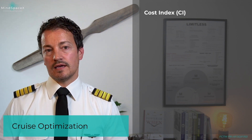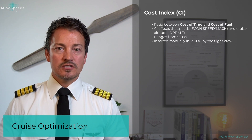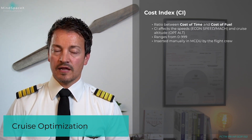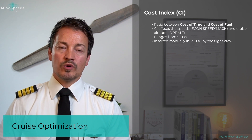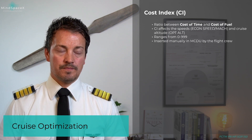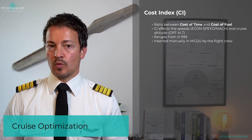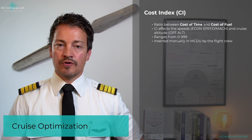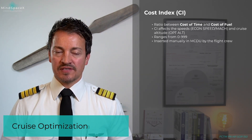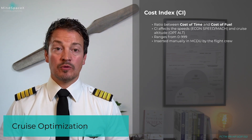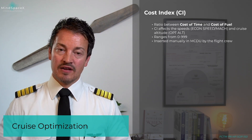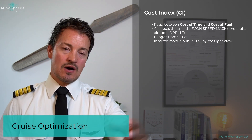Starting with the cost index. Cost index is a way for an operator to define a value which gives a ratio between the cost of time to the cost of fuel. I have two options when I want to fly payload from A to B. I can either do it in the least amount of time — the fastest way possible — but that is going to cost a lot in terms of fuel burn, flying at the fastest speed with the highest power setting.